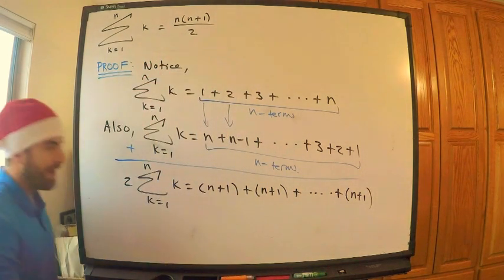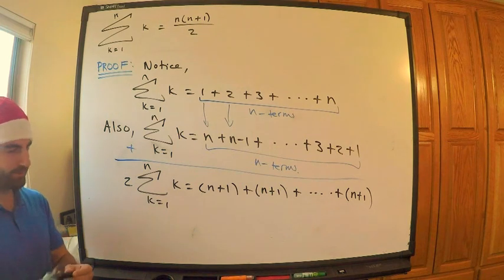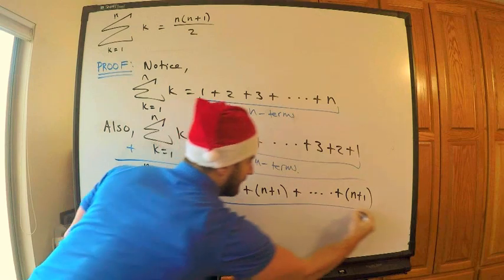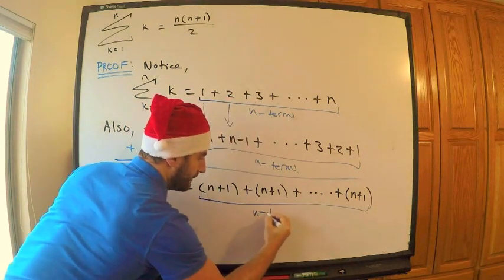So what am I doing here? I'm adding n plus 1 to itself how many times? Well, n times, they're n terms, so n of these, n terms.